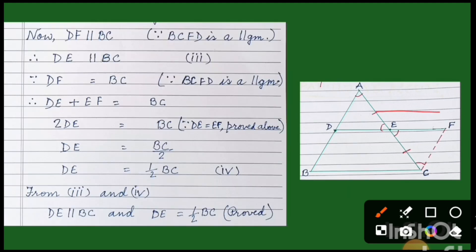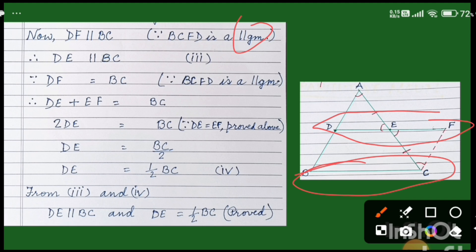Now, DF is parallel to BC because BCDF is a parallelogram, and we can also say DF is equal to BC because these are opposite sides of a parallelogram. We can write DF in a different way — that is DE plus EF. Therefore DE plus EF is equal to BC.